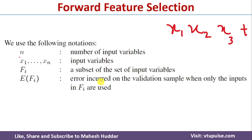E(Fi) is the error incurred on the validation sample when only the inputs in Fi are used. For example, when i is equal to 1, there is only one feature available in this particular subset, and the error incurred on that particular subset is E(Fi).